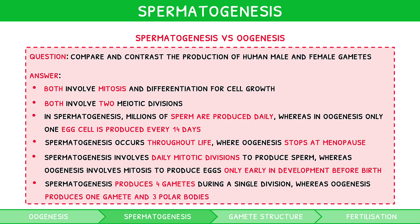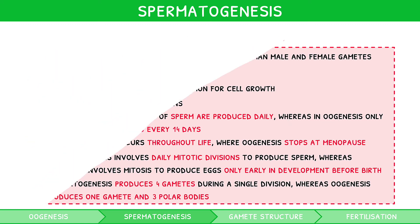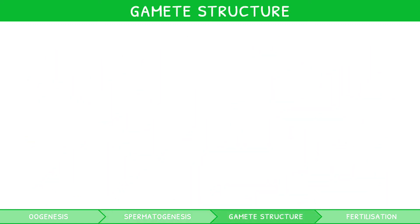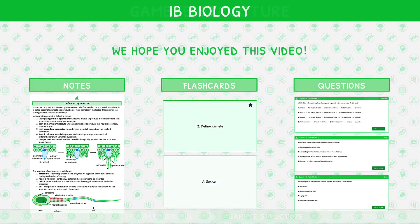You now understand how male and female gametes are produced. The IB also expects you to describe the structure of sperm and egg cells in detail. You've now reached the end of the preview for this IB science video. If you want to check out the full video, head over to our website and select a membership plan today.